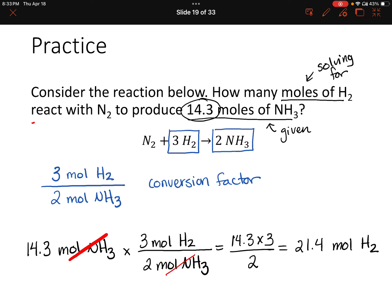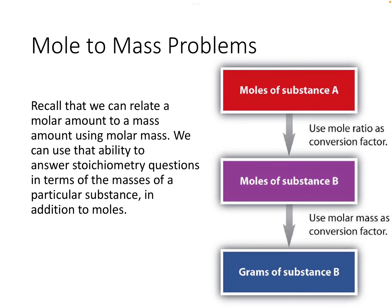Now we're going to add a step onto this process. We've just learned how to convert moles of one substance into moles of another substance using the mole ratio as a conversion factor, which came from our balanced chemical equation coefficients. Now, what if we want to figure out the mass of what we're solving for? We can convert from moles to grams using molar mass.